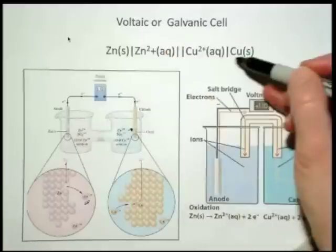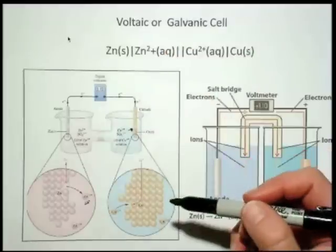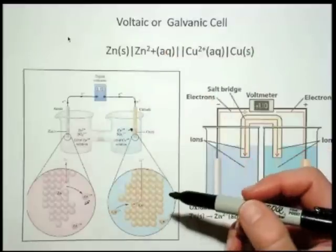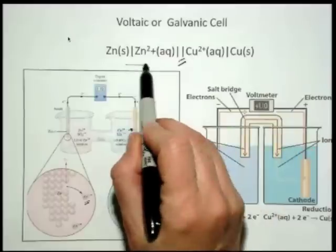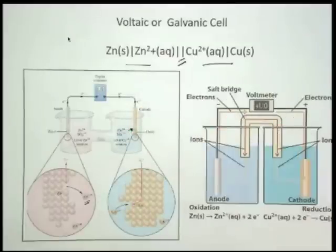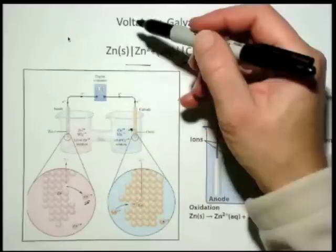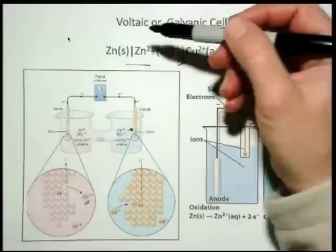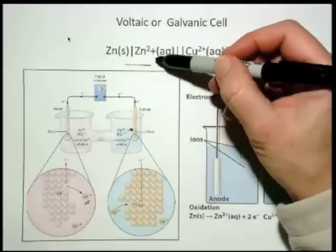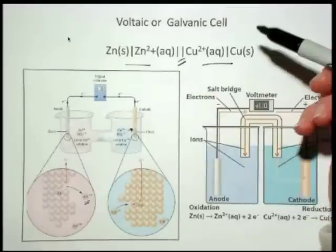This is one final look at how sometimes these electrochemical cells or galvanic cells are displayed. The double line indicates a salt bridge. Everything on the left is the oxidation, everything on the right is the reduction. And these other single horizontal lines indicate different phases. So this zinc is in the solid phase, this zinc is in the aqueous phase.